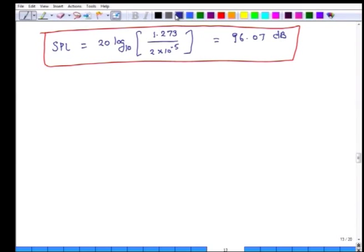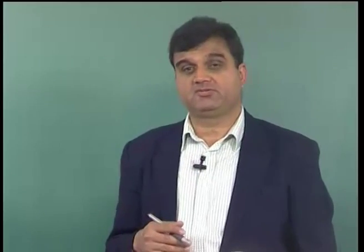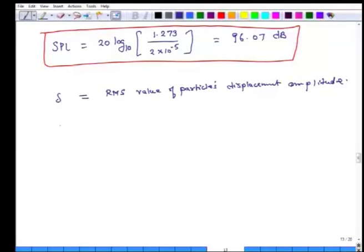Our third goal is to compute delta, the rms value of particle displacement amplitude. So far we have calculated pressure, velocity, and volume velocity. What we have not calculated is the displacement — how much each particle is moving in terms of millimeters or meters. To compute displacement we need to know how velocity and displacement are related.